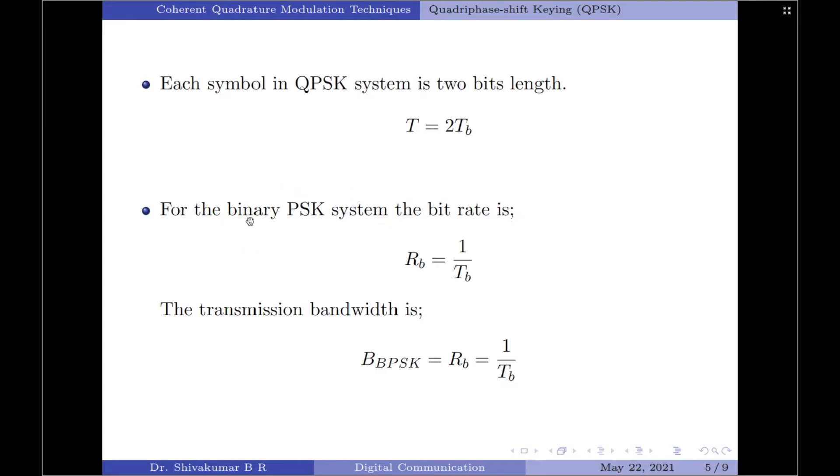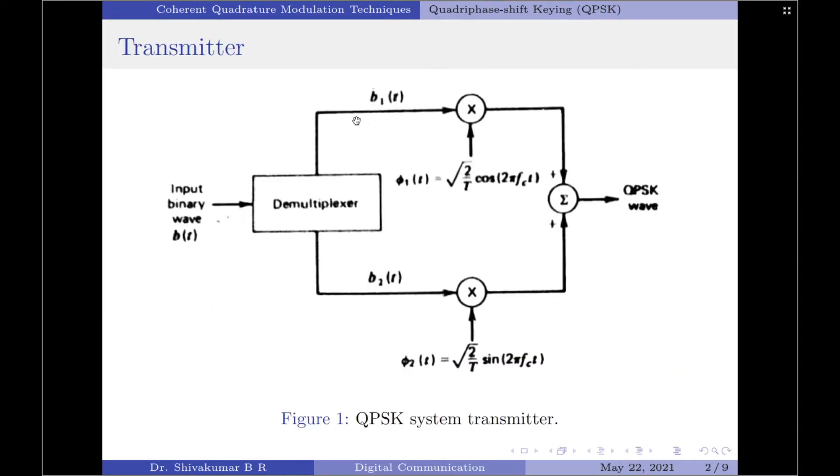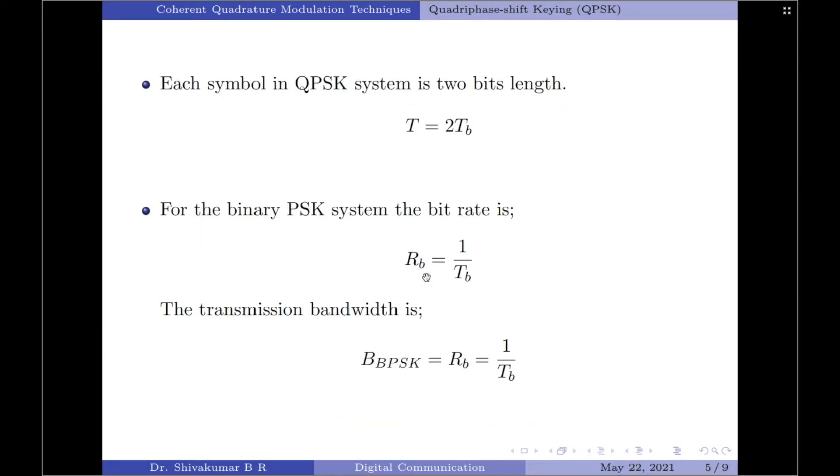I have included this portion because if you look at the transmitter diagram, each branch in the transmitter is nothing but a binary PSK transmitter. That is why I have written the equations for the bit rate and transmission bandwidths of BPSK here. Let us now write the same for QPSK.